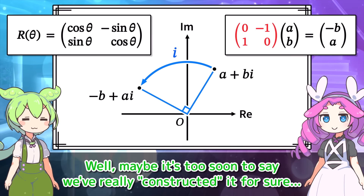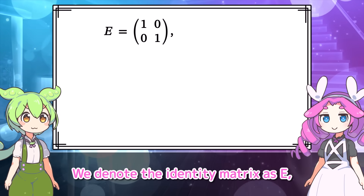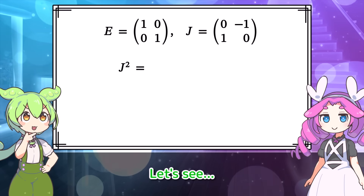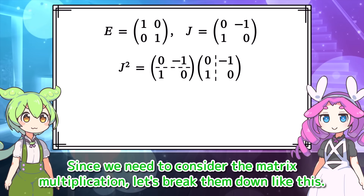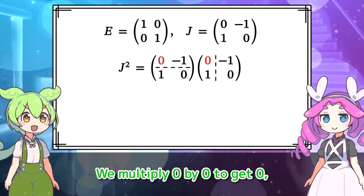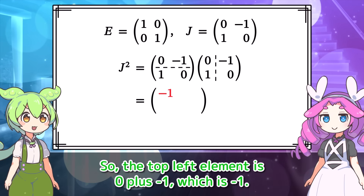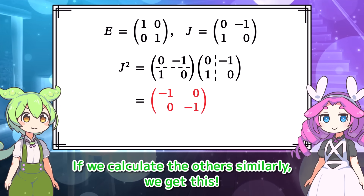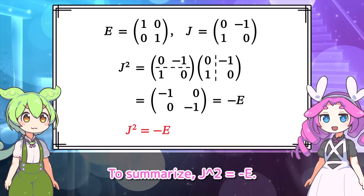Maybe it's too soon to say we've really constructed it for sure. Let's check it out. We denote the identity matrix as E and the matrix corresponding to the imaginary unit as J. Now what will J squared look like? Let's line up two J matrices and consider the matrix multiplication. Focusing on the top-left element: we multiply 0 by 0 to get 0, then negative 1 by 1 to get negative 1, so the top-left element is negative 1. Calculating the others similarly, we get negative E using the identity matrix E. To summarize: J squared equals negative E.